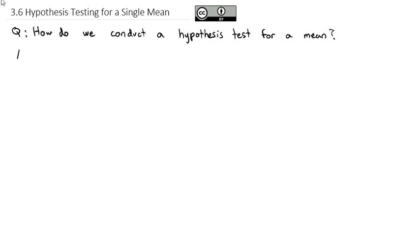The process of a hypothesis test is always the same, whether we're talking about one proportion, two proportions, or in this case, one mean. The only difference is we have a few different formulas for the mean to help us calculate that important test statistic that will help create the p-value.